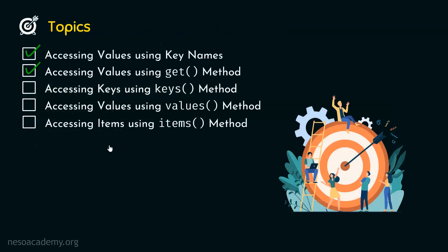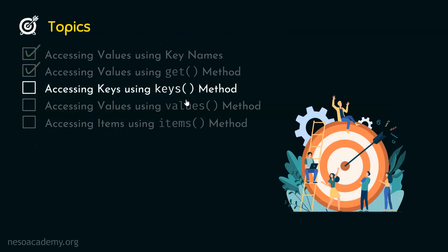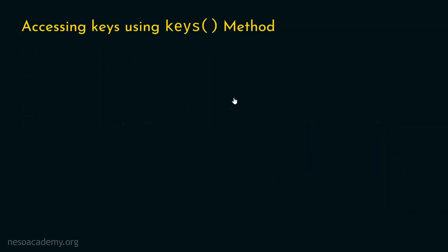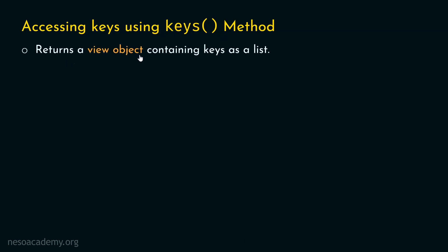Now let's move on to the next topic: accessing keys using the keys method. If instead of values we are interested in accessing keys, we can do that as well using the keys method. The keys method returns a view object containing keys as a list — an object which contains a list consisting of all keys of a specific dictionary.